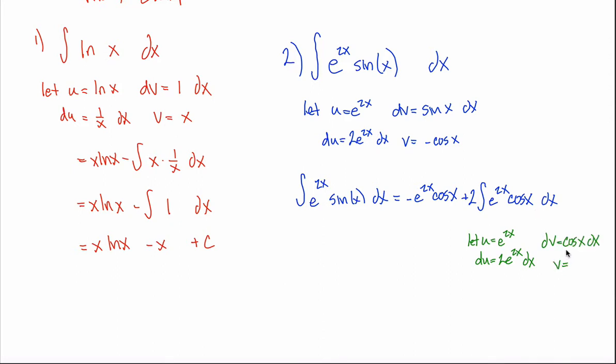And so I can figure out V by just asking myself the question, what function, when I take its derivative, is cosine of x? And the answer to that question is just sine of x. So I get these four pieces, not all that different than these four pieces up here. And I apply my integration by parts.